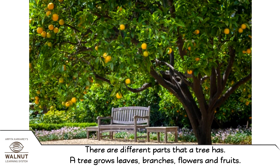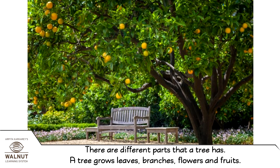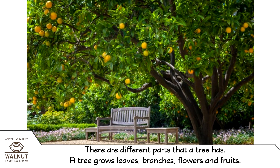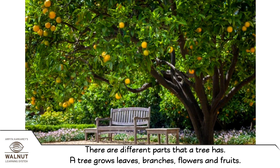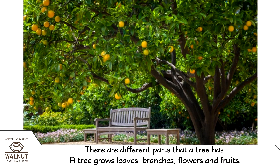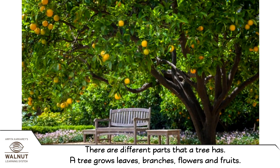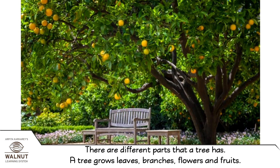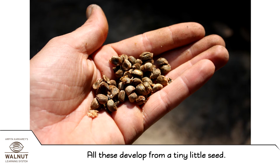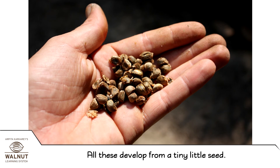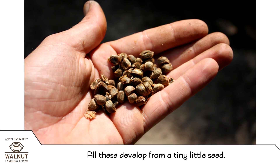There are different parts that a tree has. A tree grows leaves, branches, flowers and fruits. All these develop from a tiny little seed.